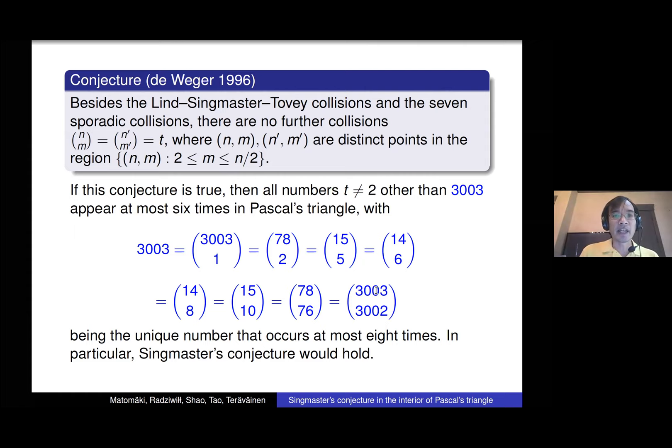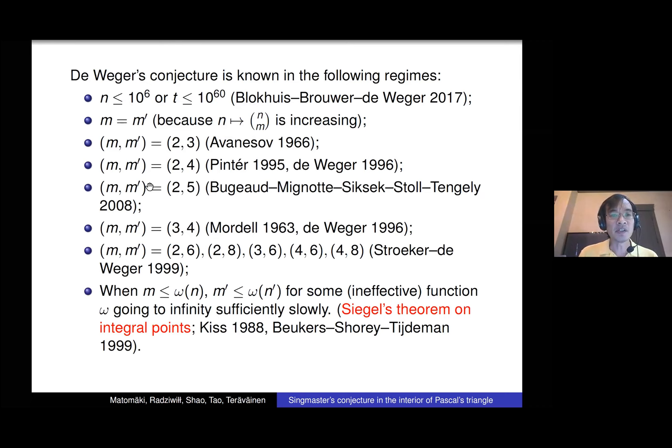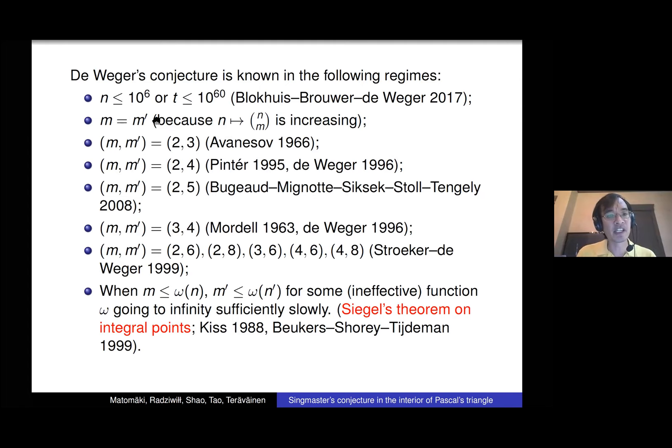So that is the conjecture. What is known? This conjecture has been verified numerically: up to the first million rows, or all entries up to 10^60, there are no other collisions found other than those already listed.